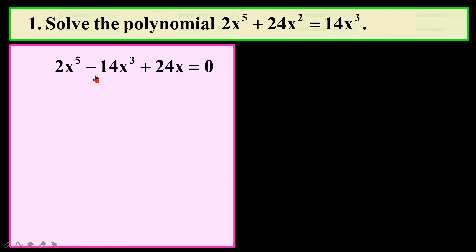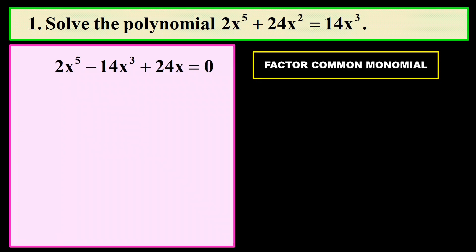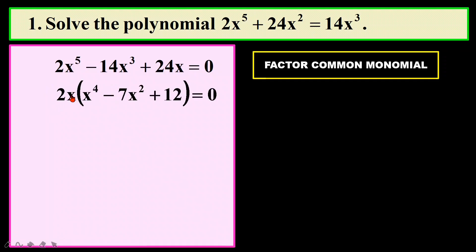Look at this polynomial. When we want to solve this polynomial, the first thing — maybe you can find a factor using long division. I'm not going to do that for this one because I noticed that there are common factors in this equation. Although this is power of 5, there is a common factor. I can see a 2 and an x which can be factorized out.